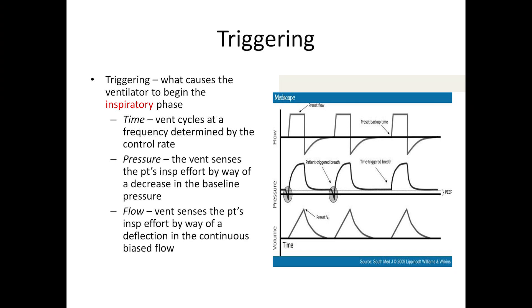For some patients, the trigger is time. We can set the mechanical ventilator to a certain rate, and if we set a number of breaths per minute at 10, then every six seconds the ventilator will look to deliver a breath.